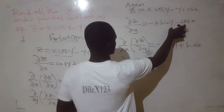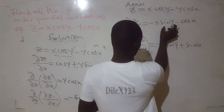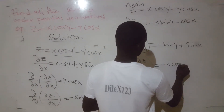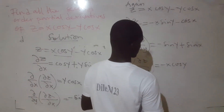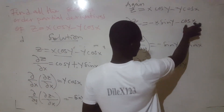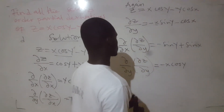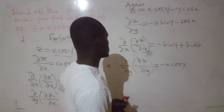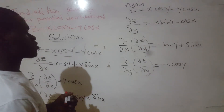Now we have to go and differentiate with respect to y. So, differentiate this with respect to y. The differential of sin y will give cos y, so we get minus x cos y. When we differentiate cos x with respect to y, we get 0, because cos x is a constant. The differential of a constant gives 0.